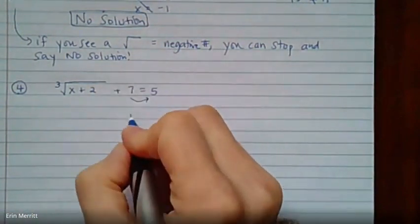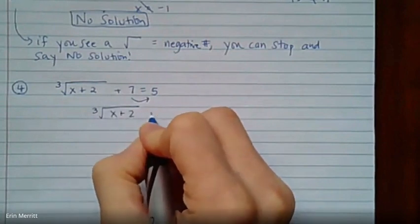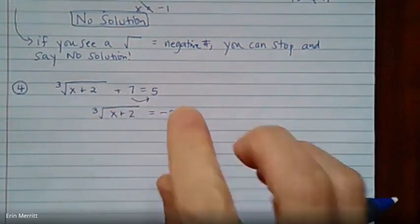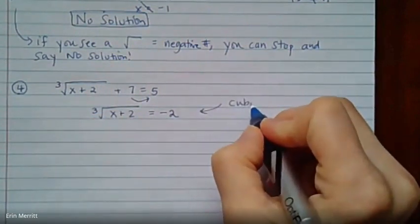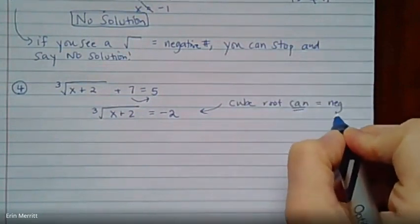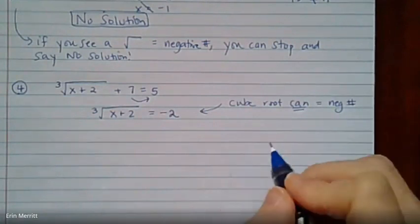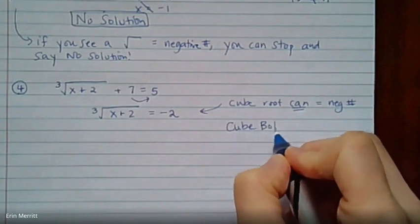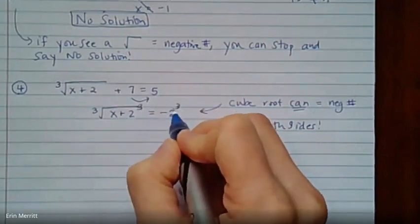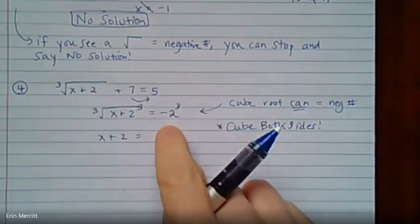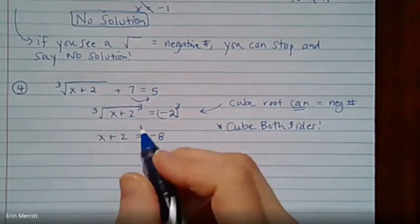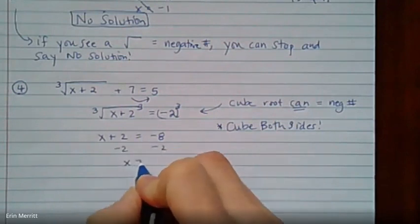And now right here, a cube root can be equal to a negative. A square root cannot. So remind yourself, a cube root can equal a negative number. So this is perfectly fine. So what we're going to do then is cube both sides. So cube the left, cube the right. This gives us x plus 2, negative 2 cubed. So negative 2 times negative 2 times negative 2 is negative 8. And then subtract 2. We get x equals negative 10.